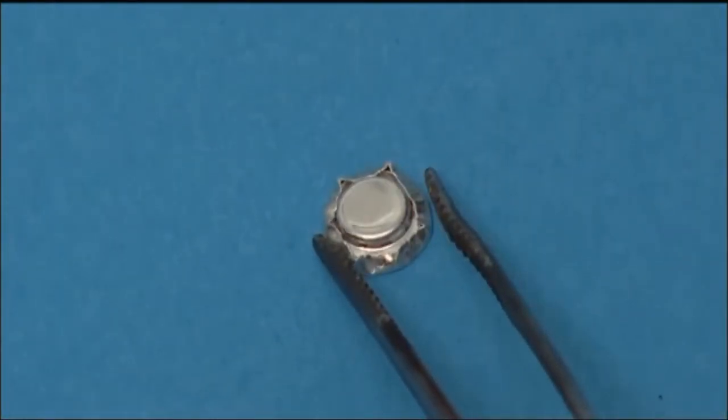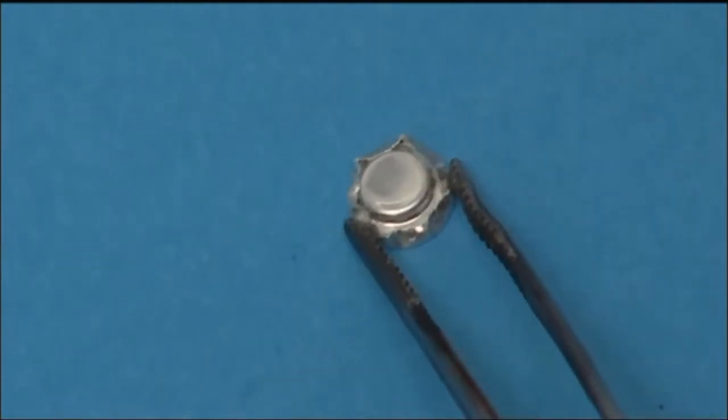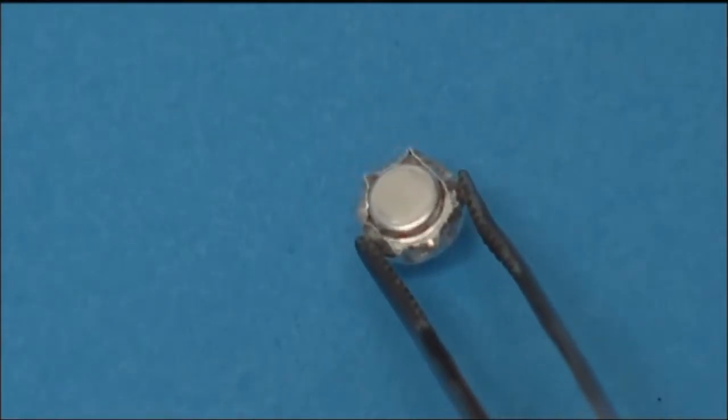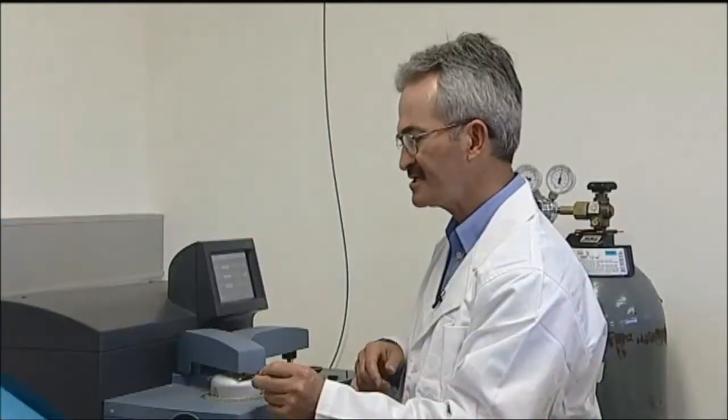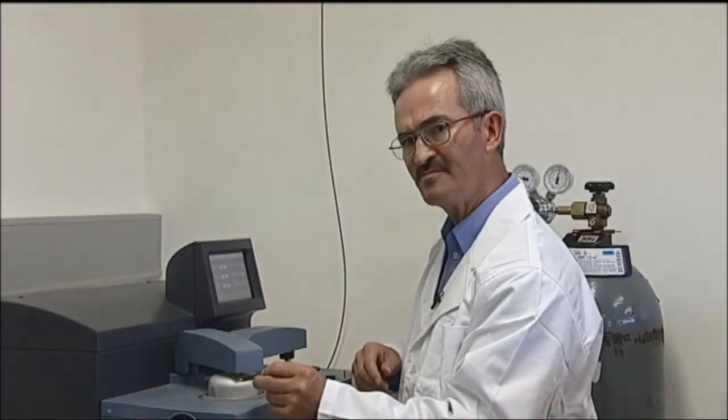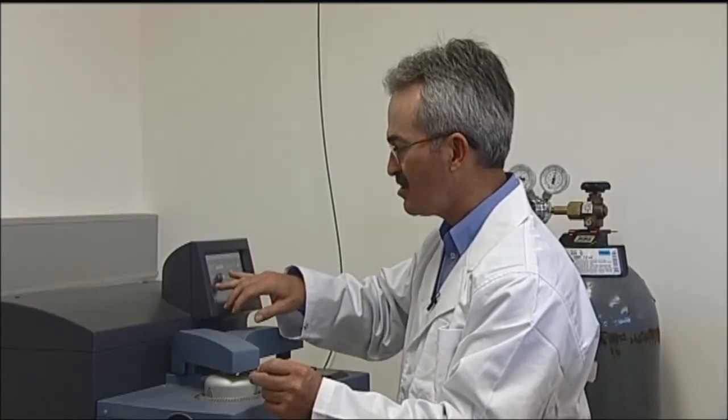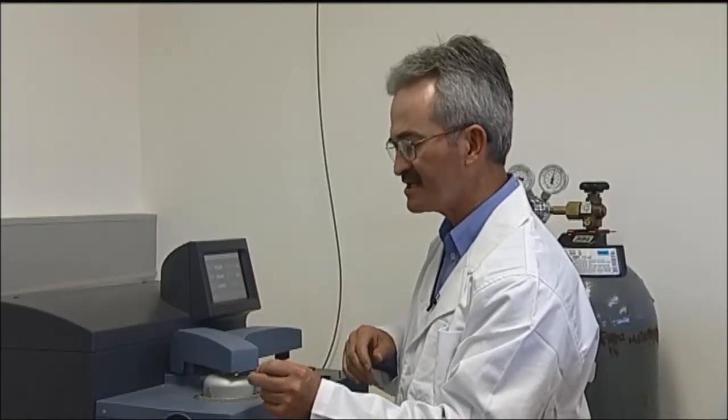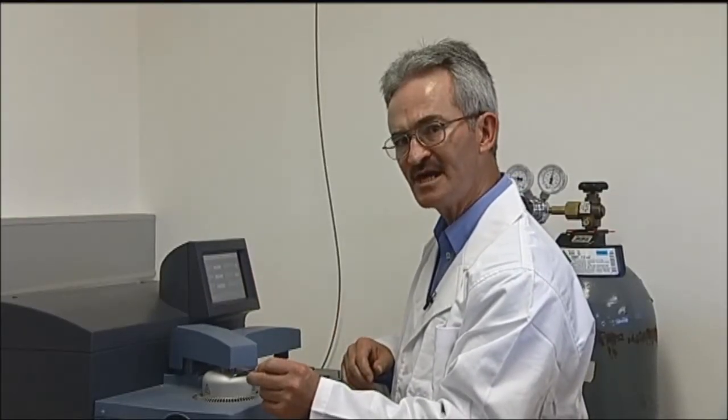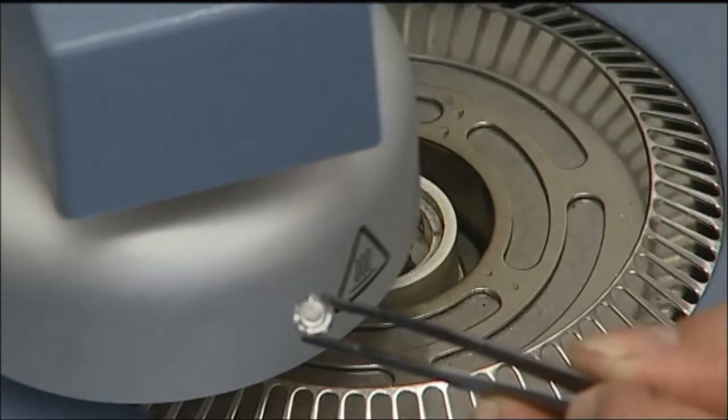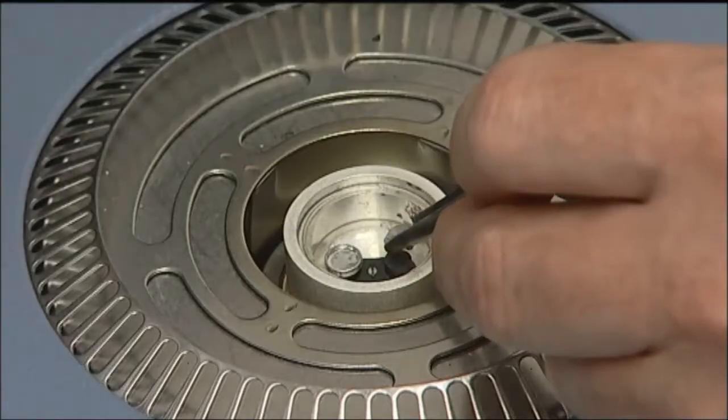Now we have sealed the sample inside the aluminum pan and we are ready to put it into the DSC instrument for thermal analysis. Here is the DSC instrument. We bring the sample sealed inside the aluminum pan, open the furnace of the DSC instrument, and get ready to put the sample on the right side of the DSC furnace.